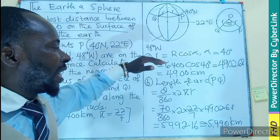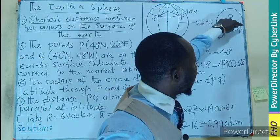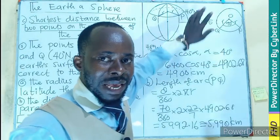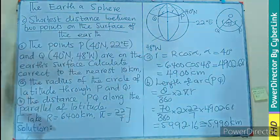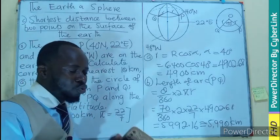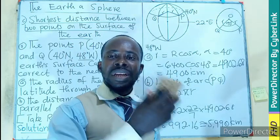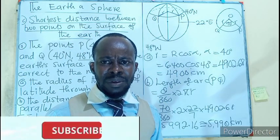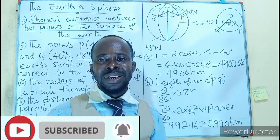We can also be asked to find the distance through the earth, meaning the chord, the chord PQ. But here we are only finding along the latitude, which is the parallel of the latitude. So remember, there are two aspects: through the earth and along the latitude. I guess the concept is well explained. Don't forget to like, share, comment and subscribe.